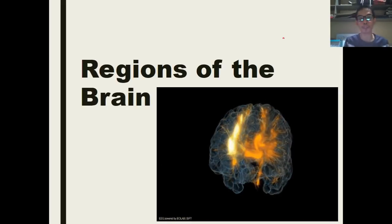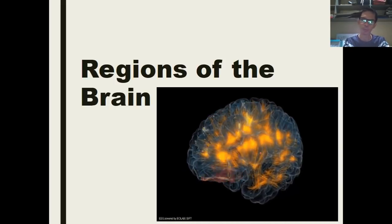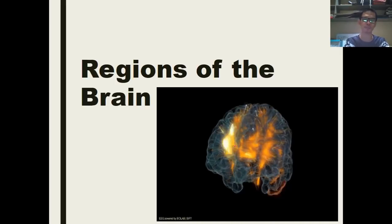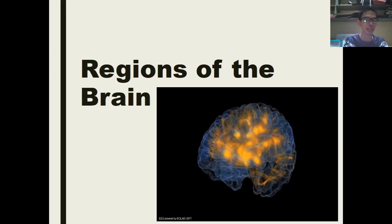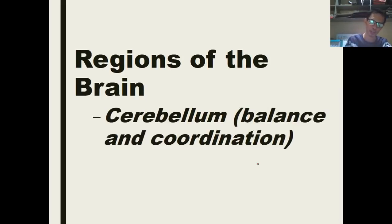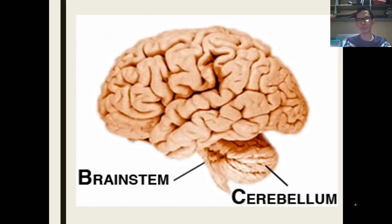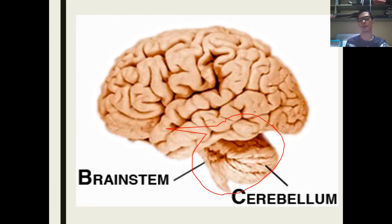The brain is made up of several regions. We have the hindbrain, the midbrain, and the cerebrum. Starting with the cerebellum — it performs balance and coordination, which is the reason why we can walk upright. The cerebellum is found at the back part of your brain stem, in the lower part.